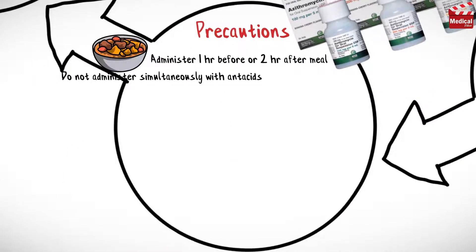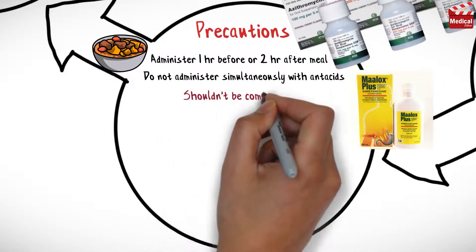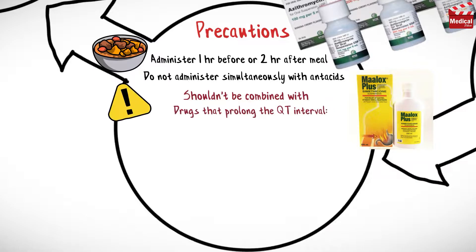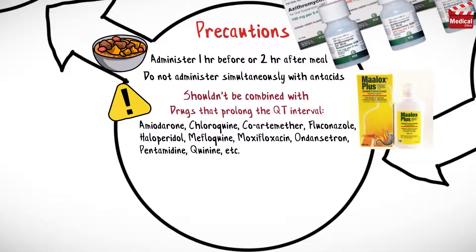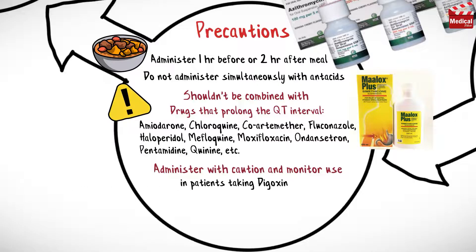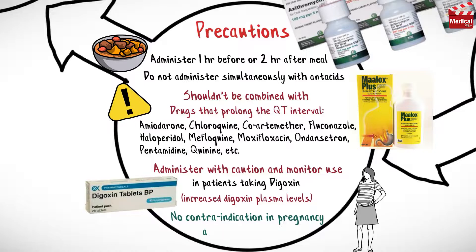Administer one hour before or two hours after a meal. Do not administer simultaneously with antacids such as aluminium or magnesium hydroxide — administer two hours apart. Avoid combination with drugs that prolong the QT interval. Administer with caution and monitor use in patients taking digoxin.